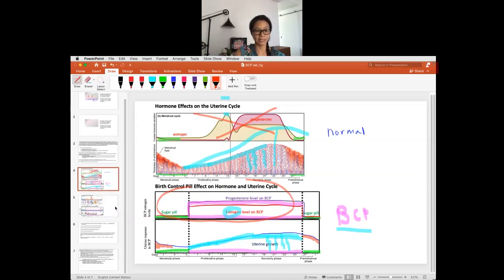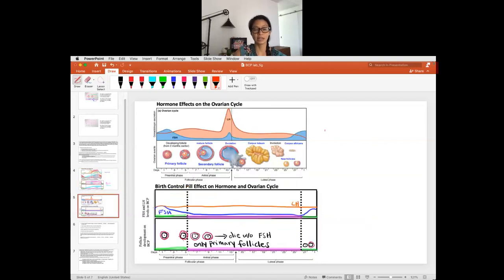So that's the birth control pill on there. And then let's say look at what, so this is what the birth control pill does to the uterus. Now let's look at what the birth control pill does to the ovary, okay? So the goal is actually to work on the ovary if it's contraception that you're looking at, okay?